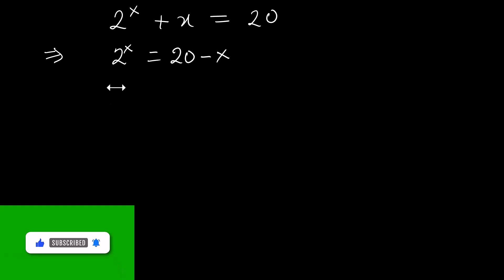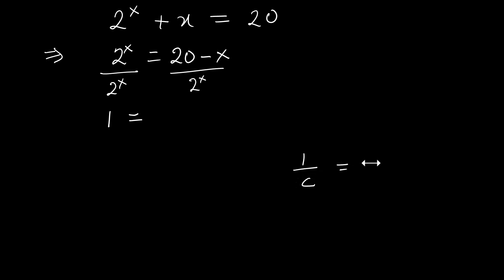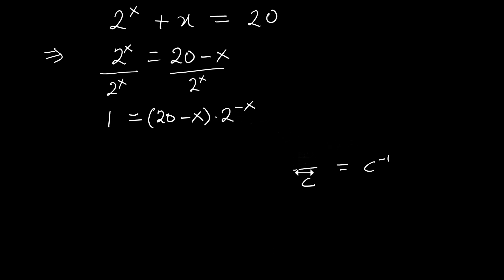Now let me divide both sides. I want everything on my right, so I would divide both sides by 2^X. We have 1 on the left, and (20 minus X) over 2^X on the right. Since C^(-1) is the same as 1/C, I can write this as (20 minus X) times 2^(-X).